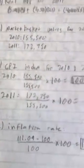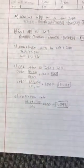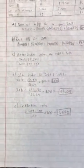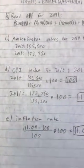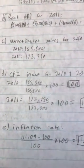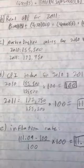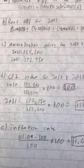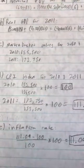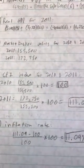Then the CPI index for 2010. For 2010, you take $155,500, which is the market basket value, divided by $155,500, which is the base year value. You divide that, it makes one, then you multiply it by 100 and you get 100.